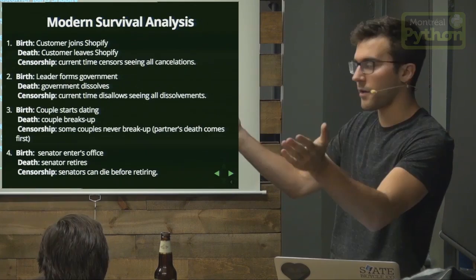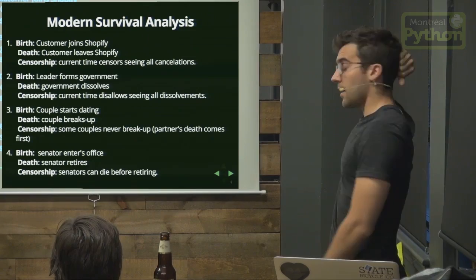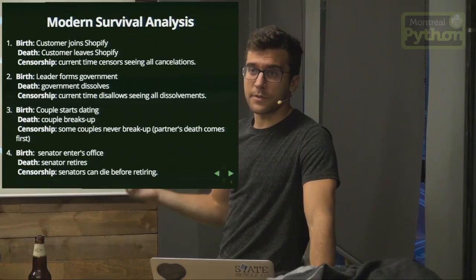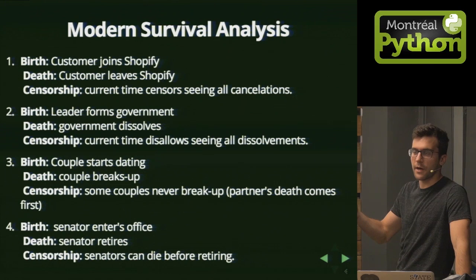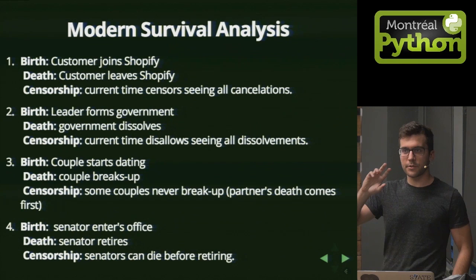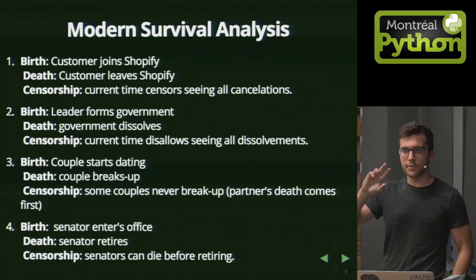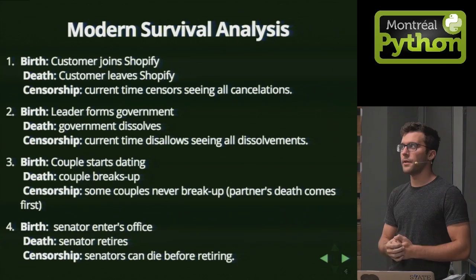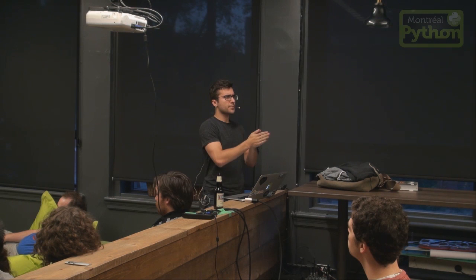Another example: a senator enters office — that's birth; leaving office is death. Censorship could be they die before retiring, so death is actually a censorship event. These examples turn the idea of death on its head. When I say birth and death, I mean them abstractly — birth could be anything, death could be anything. You could be interested in the time between a first pregnancy and a second pregnancy: birth is the first pregnancy, death is the second pregnancy.